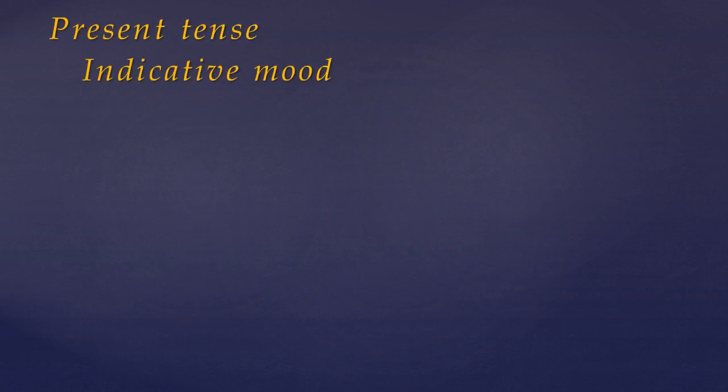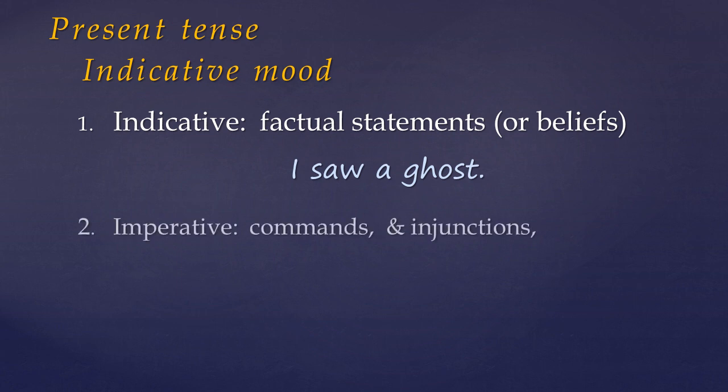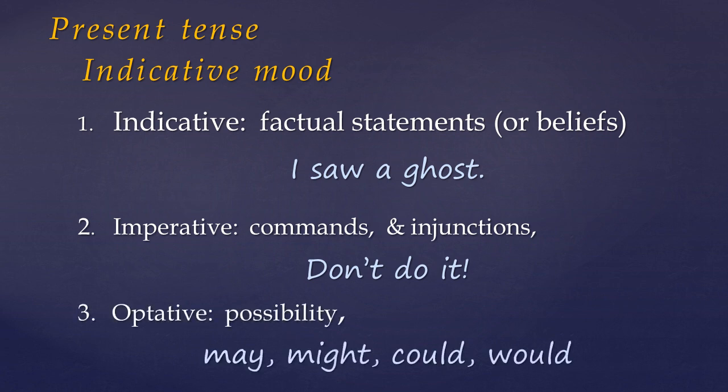Now verbs in Pali alter to indicate both tense and mood. And it's important to realize here that we're talking about the present tense, as opposed to past or future. And the indicative mood, that is, how we express factual statements, or at least what are believed to be factual statements. As opposed to commands or injunctions, or if-then, may-might type statements. As these are different moods, and take different systems of inflection.